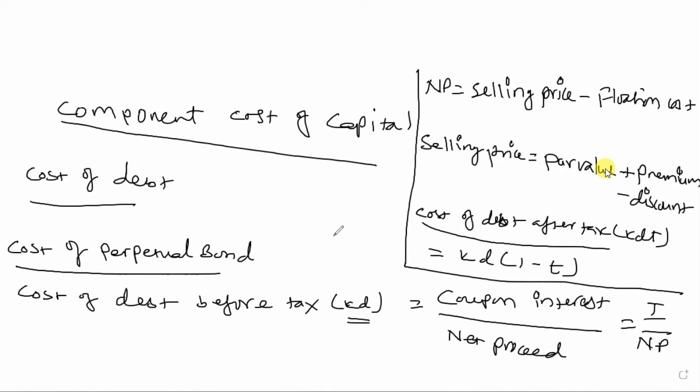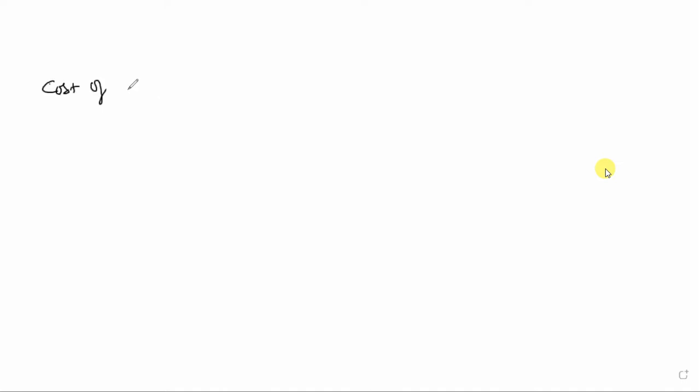So, if you are computing KD, you will have a minus tax rate factor, giving you the cost of debt after tax. In this component, debt has a tax-deductible property. Cost of debt before tax is needed first.